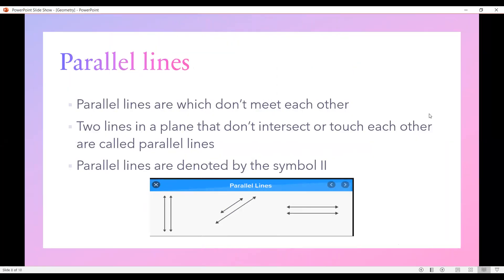Parallel lines are lines which never meet each other. Two lines in a plane that never intersect or touch each other are called parallel lines. Parallel lines are denoted by the symbol like this. These are parallel lines. All of them are parallel lines.